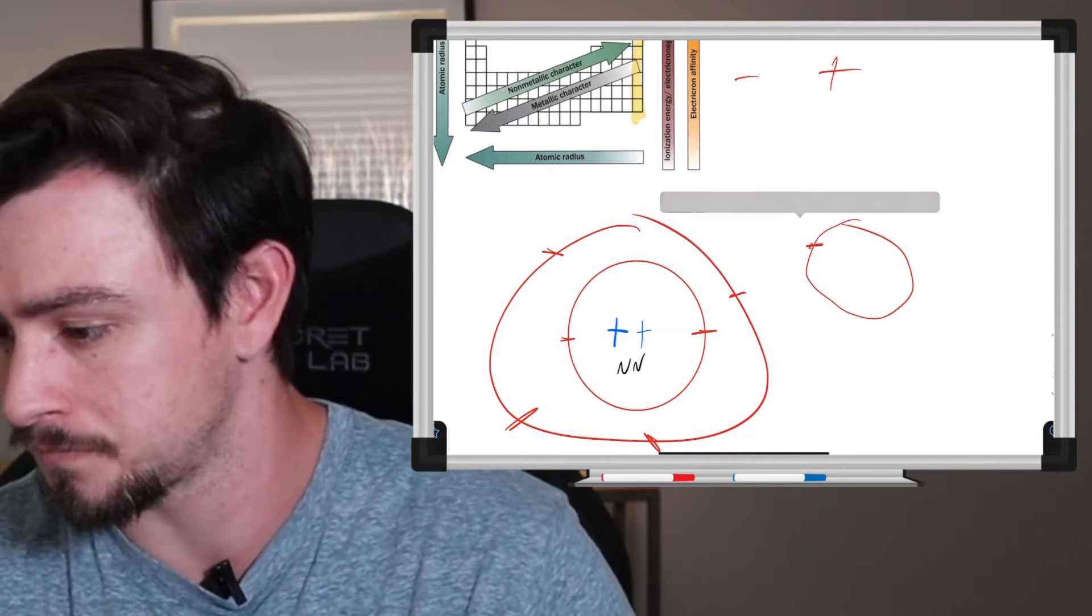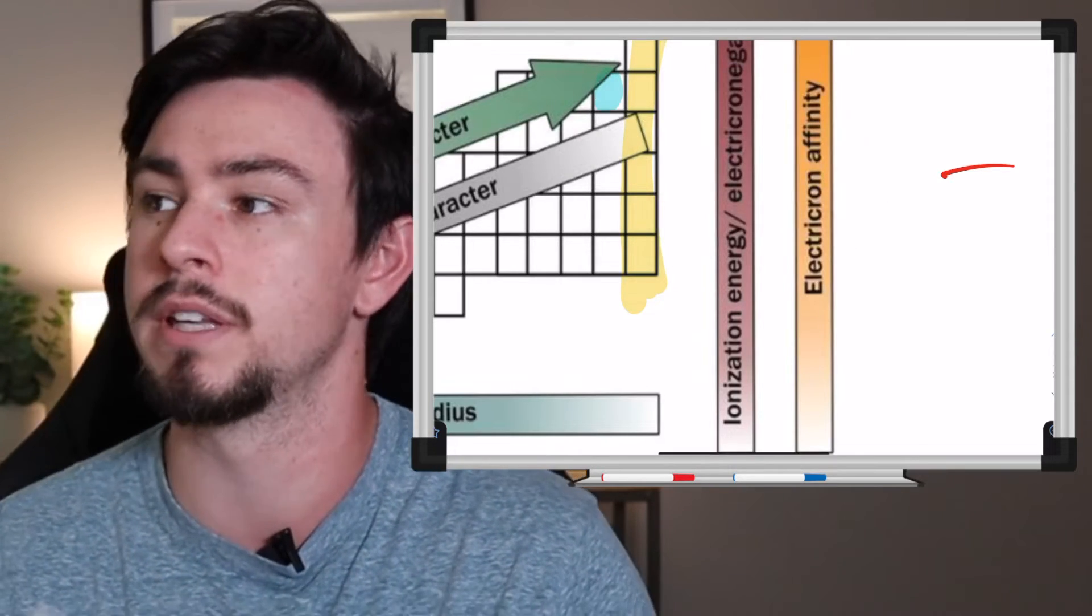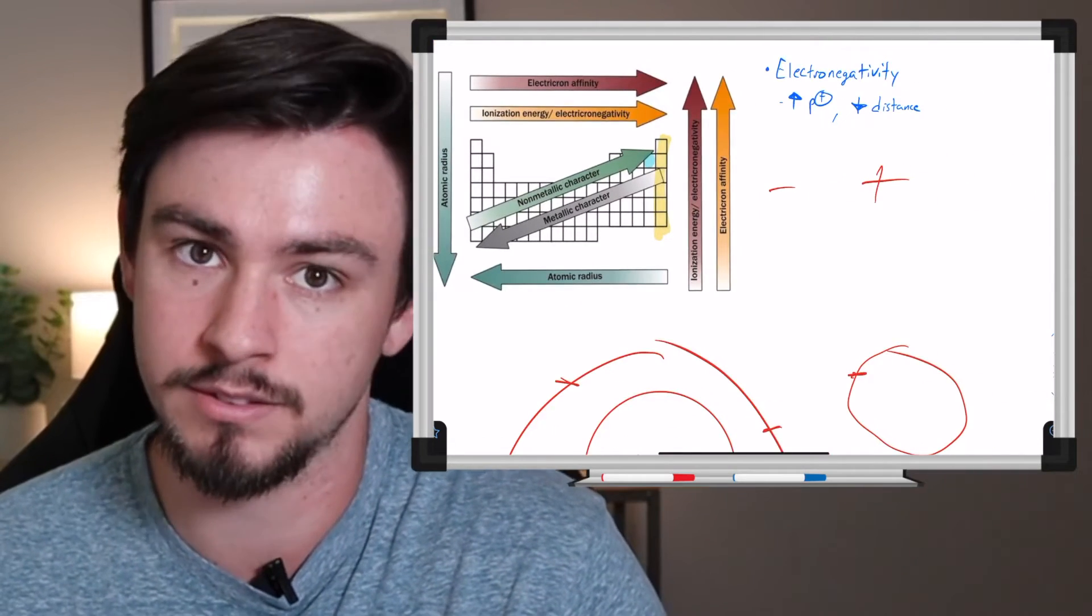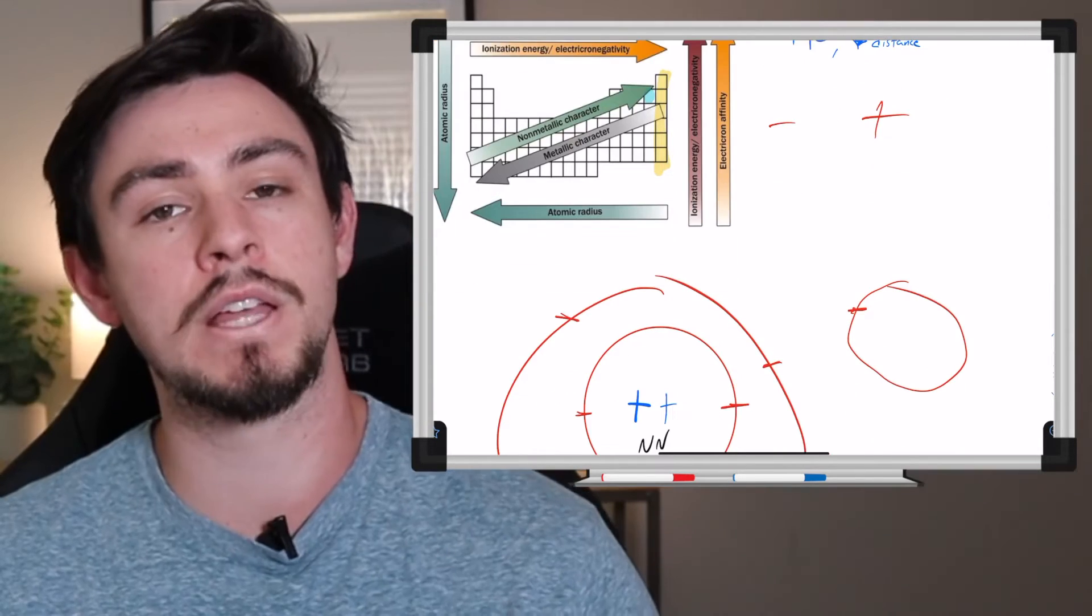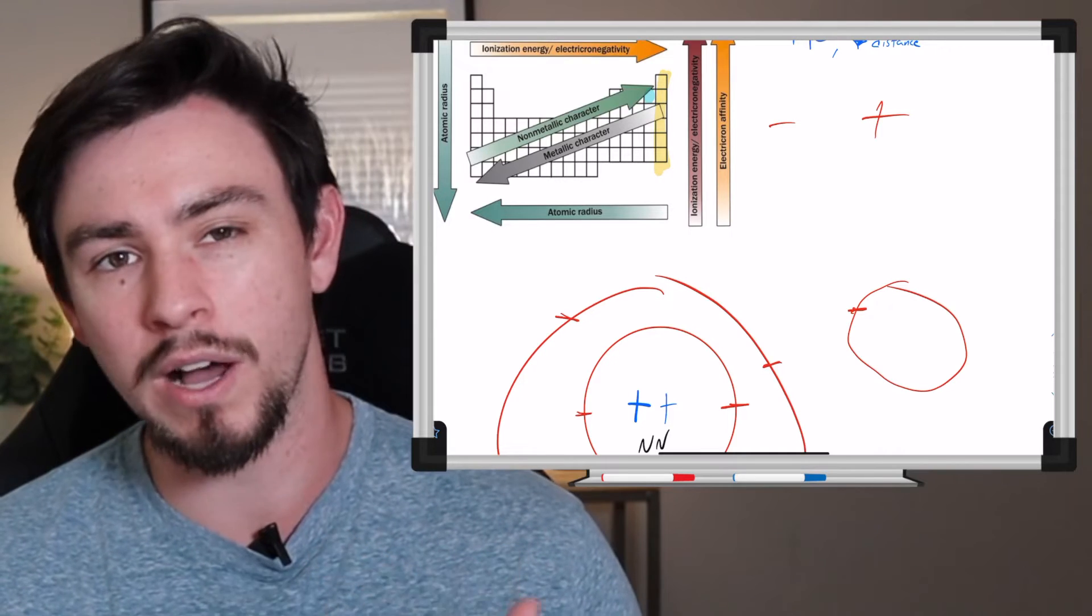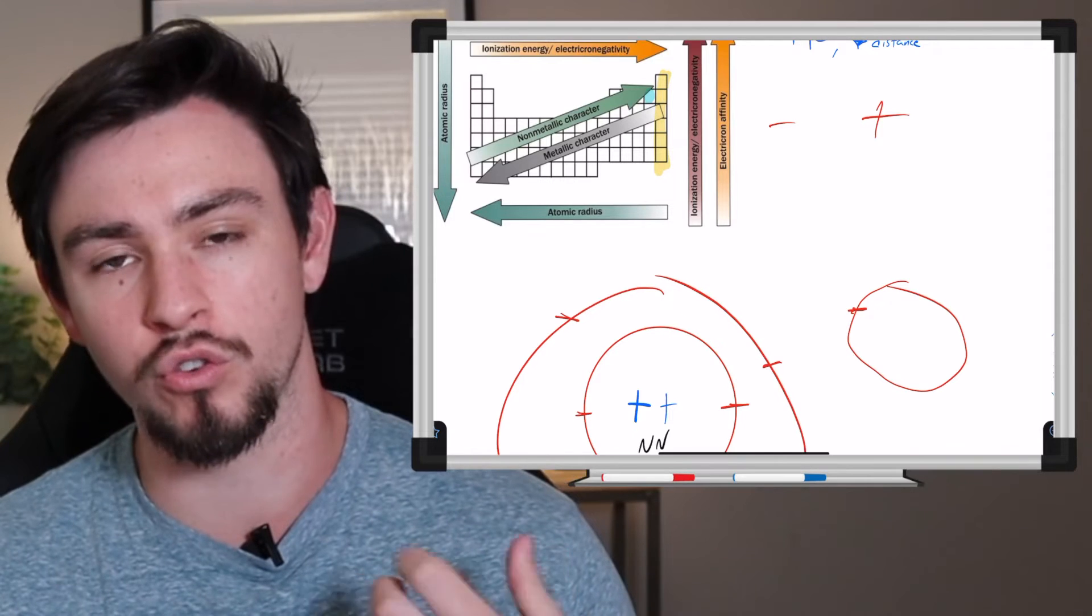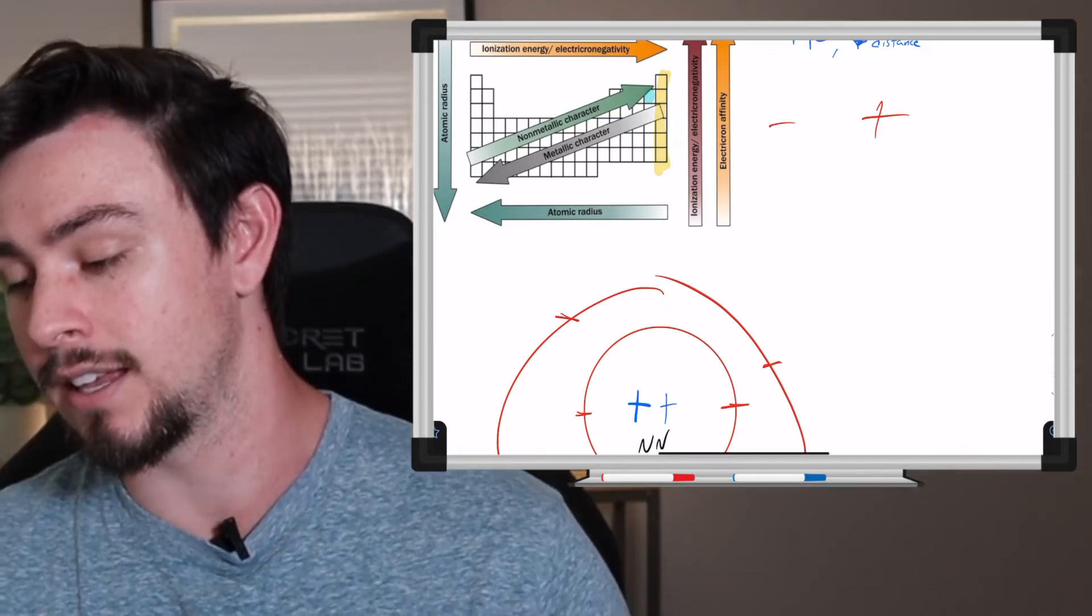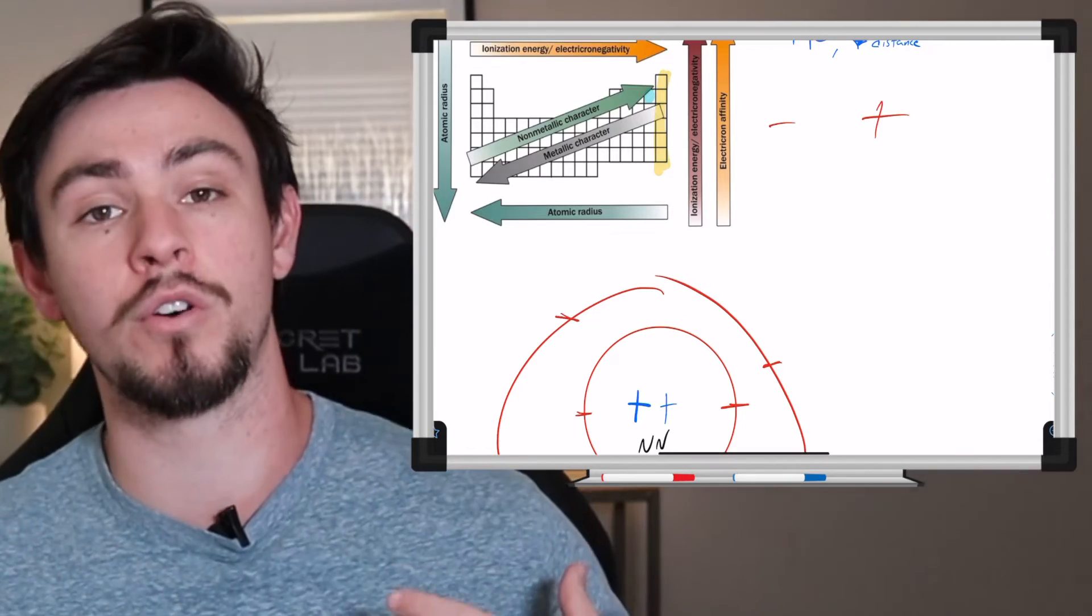But regardless, that means that the most electronegative atom is going to be right here, and that's going to be fluorine. So as you go up and to the right, you increase in electronegativity until you reach the noble gases. Now that's something that most people have memorized, but the important part is to understand why is that the case? Why does fluorine have such a huge draw of electrons?